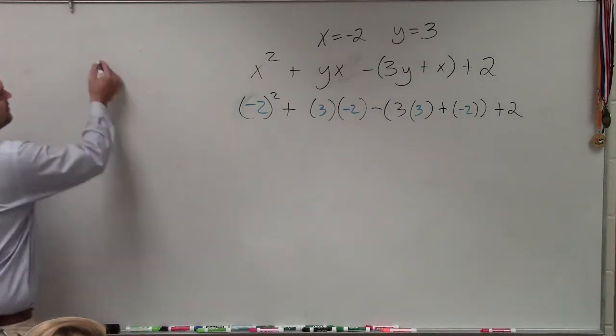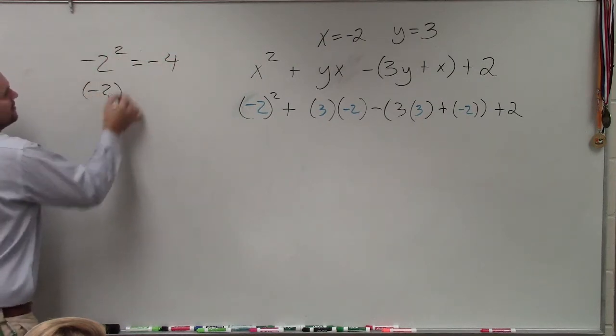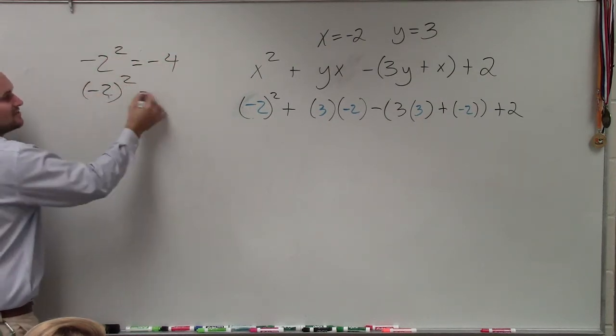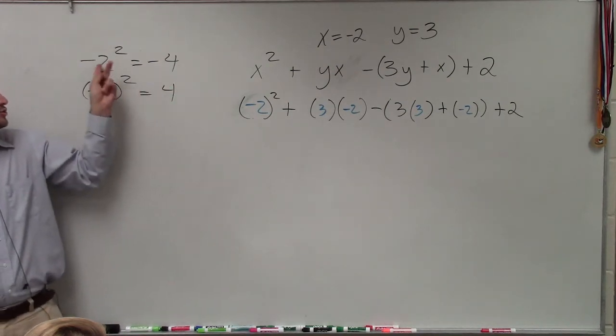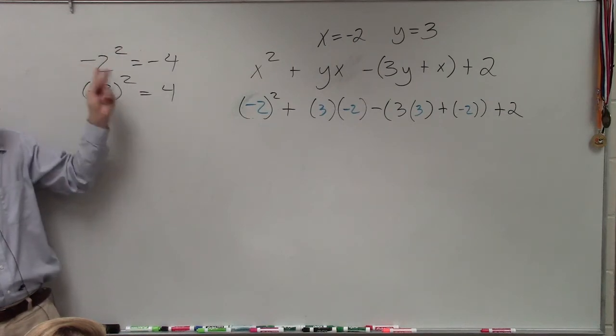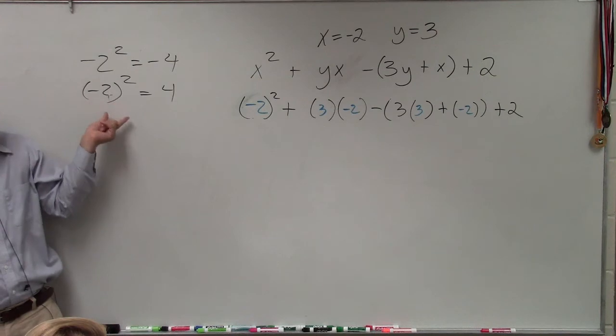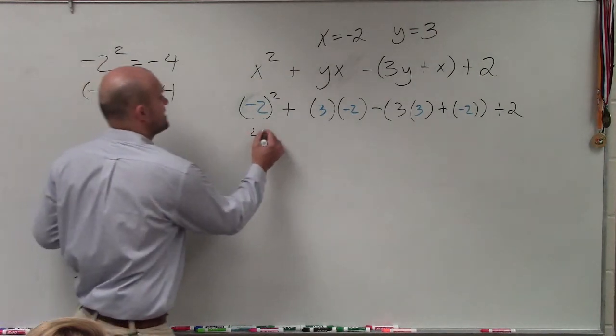Negative 2 squared equals negative 4, but negative 2 in parentheses squared equals positive 4. Remember the order of operations: you square the number first, then multiply by negative 1. But when everything's inside the parentheses, you're multiplying negative 2 times negative 2, which is positive 4.